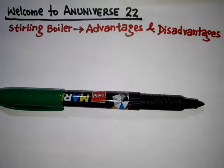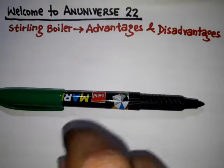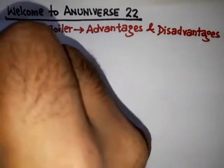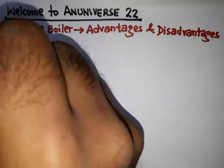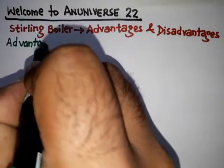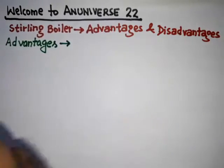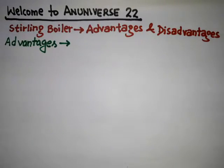Hello friends, welcome to N Universe 22. In this video we will discuss the advantages and disadvantages of the Stirling boiler. Let's start with the advantages. Basically, the Stirling boiler is a water tube boiler, stationary boiler, externally fired boiler, and natural circulation boiler.